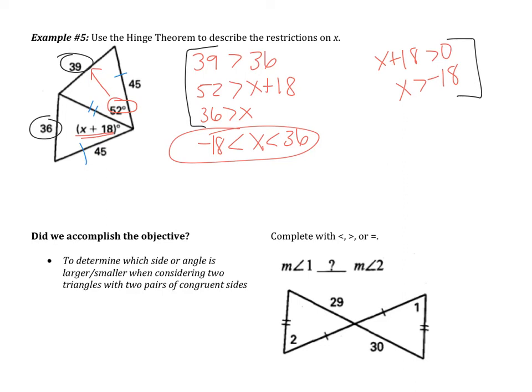Those are some more difficult problems that you're going to be doing in class. In this video we learned about the hinge theorem. The hinge theorem applies to two triangles that have two pairs of congruent sides. The larger angle will be located across from the larger side. We used that in examples 1 to 4 to determine which angle or side was larger, and in example 5 we used the hinge theorem to apply restrictions to X.